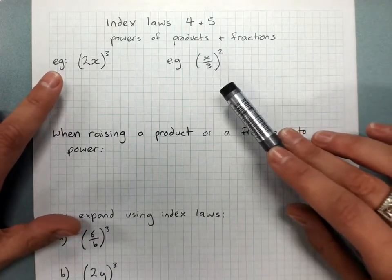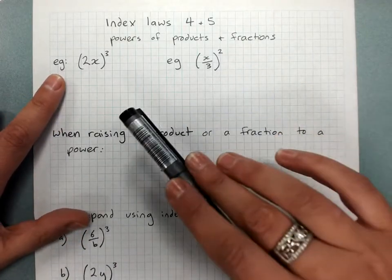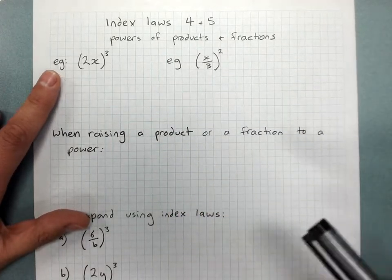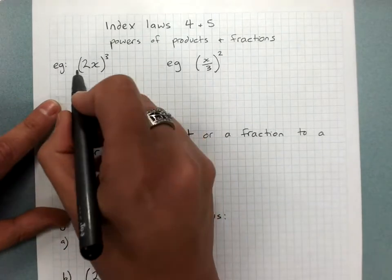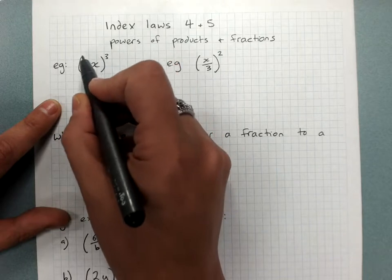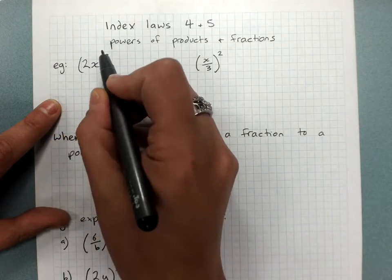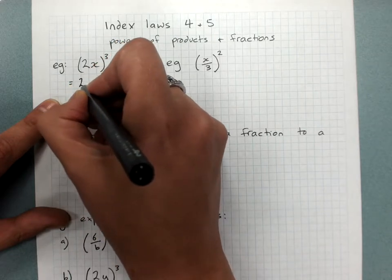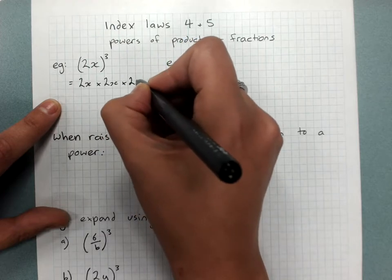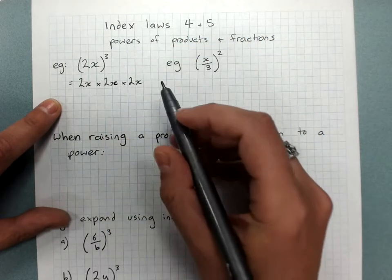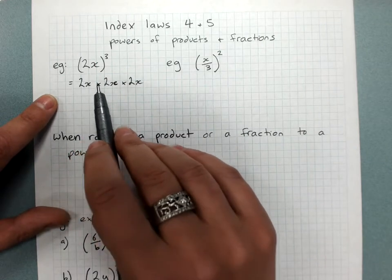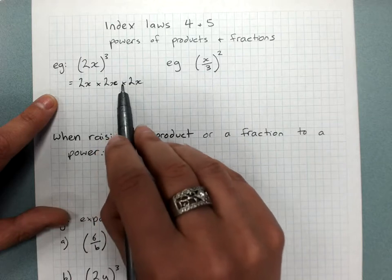When we learn index laws, we can do them the long way around by expanding, and then we can find out what the shortcut is. So take 2x cubed. Cubed means I'm going to multiply what I'm cubing by itself three times: 2x times 2x times 2x. And 2x means 2 times x, so it's actually 2 times x times 2 times x times 2 times x.